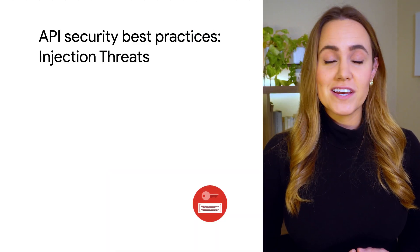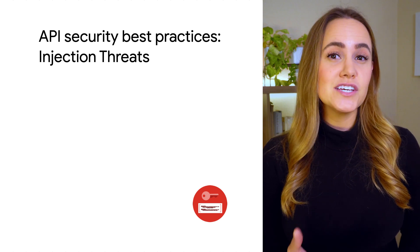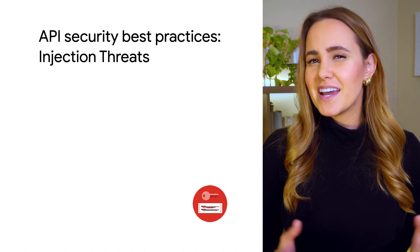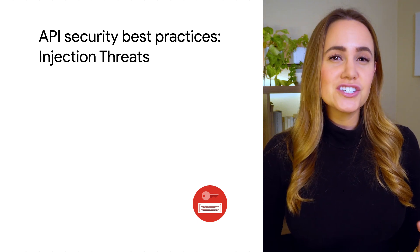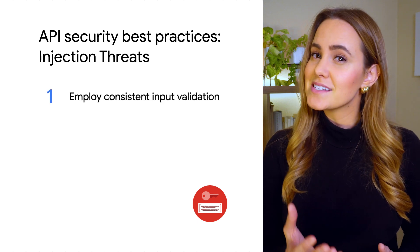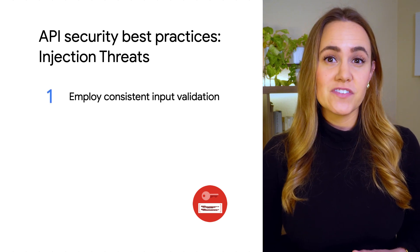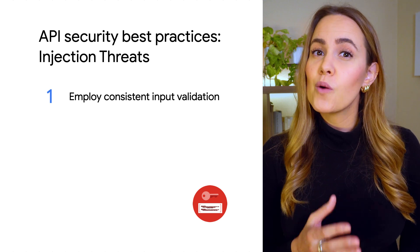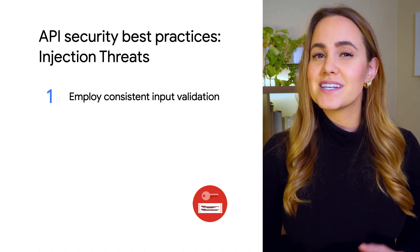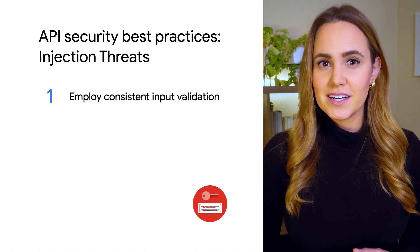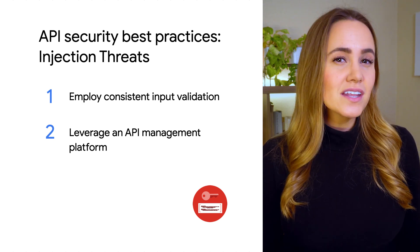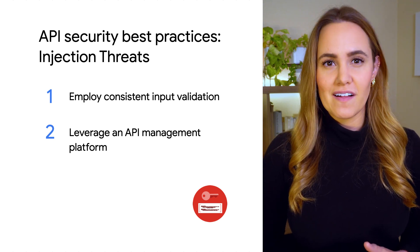APIs also face injection attack threats like SQL injection, remote code execution, or cross-site scripting. Injection attacks occur when malicious code is injected into a vulnerable software program. Luckily, since APIs have open API specifications, or Swagger specs, with well-identified inputs and outputs, these threats are easy to protect against using consistent input validation. API management platforms like Apigee provide a host of policies that allow you to easily deploy input validation.